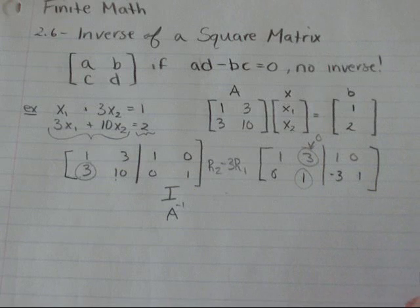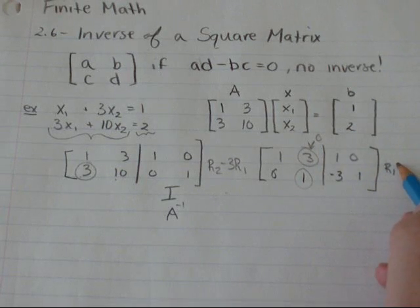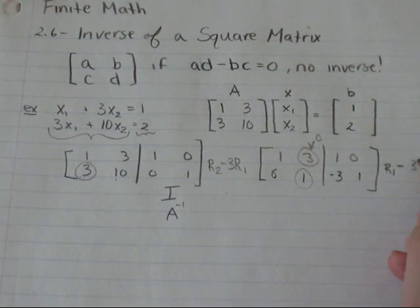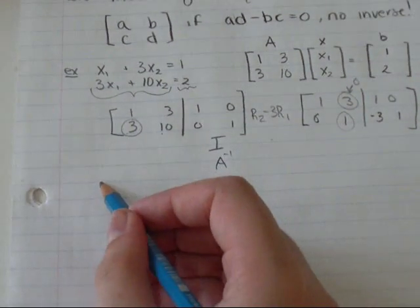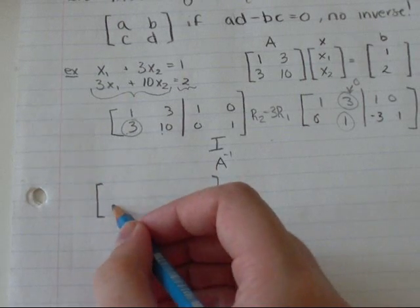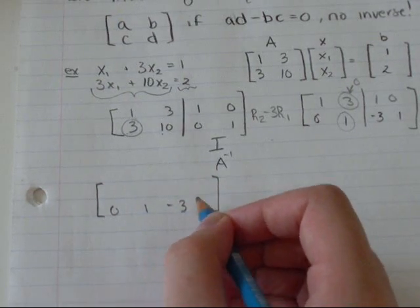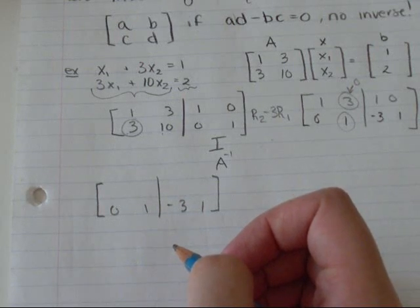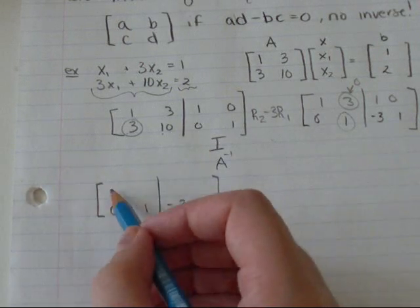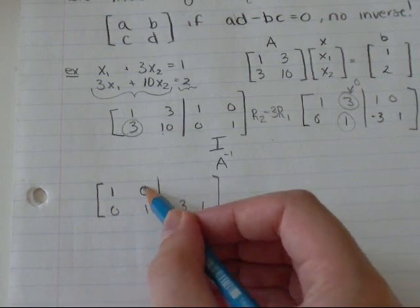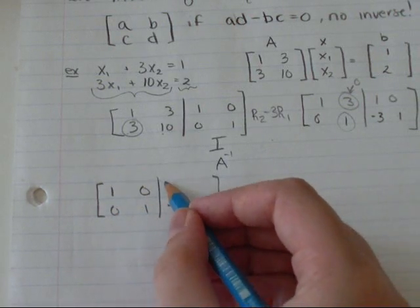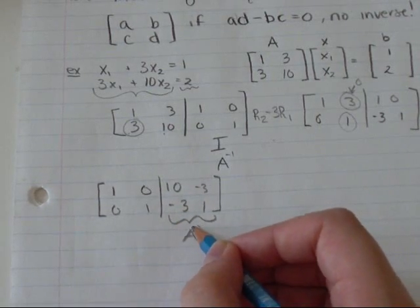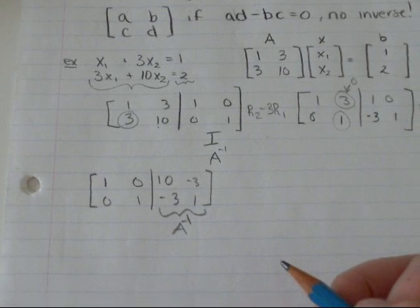So to do that, I'm going to go row 1, the row I'm changing, minus... I'm changing it to row 1 minus 3 row 2. So row 2 stays the same: 0, 1, negative 3, 1. And row 1 is going to become 1 minus 3 times 0, which is just 1. That becomes 0. This becomes 10 and negative 3. So this is my A to the negative 1, my A inverse.